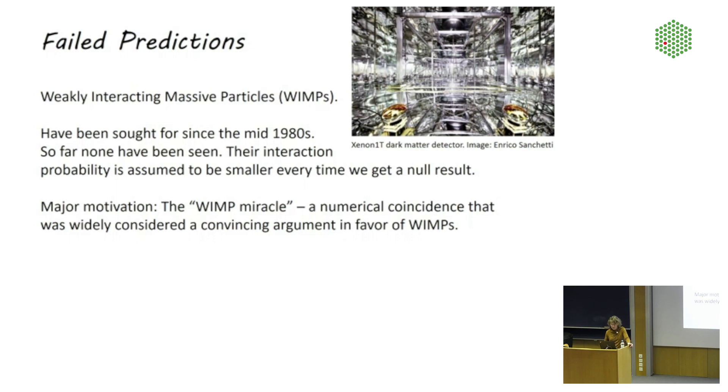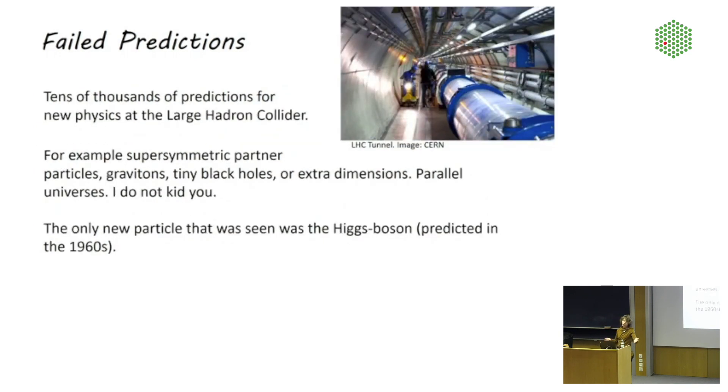The major motivation to look for those things is the so-called WIMP miracle. That's a numerical coincidence that was widely considered a convincing argument in favor of WIMPs. The way that this works, roughly speaking, is like this. If you have a particle that interacts with the strength of the weak nuclear force, this is why weakly, and it has masses that you could just about see at the Large Hadron Collider, which now we know has not happened, but that is how the argument went at the time, then you can calculate how many of those particles should have been produced in the early universe. And if you do that, you get a number that is about just right to explain the observed abundance of dark matter. And that is what the WIMP miracle is. It has now been experimentally ruled out.